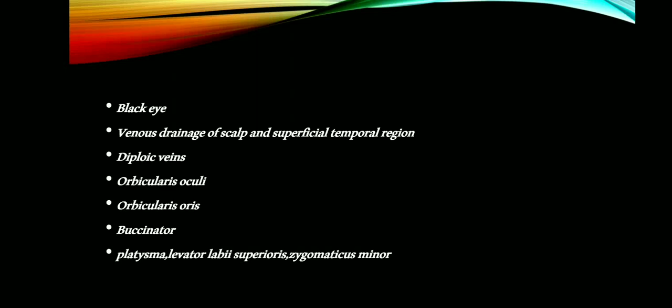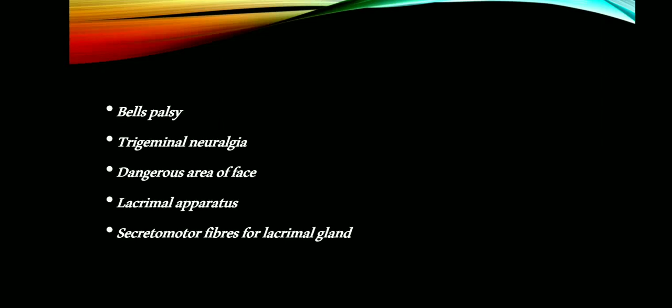Short notes that can be asked from this chapter include: Black eye, venous drainage of scalp and superficial temporal region. Diploic veins is not that important. Orbicularis oculi is also not that important. Orbicularis oris is important. Buccinator is also important. Short notes can also be asked on Platysma, Levator labii superioris, and Zygomaticus minor. Short note on Bell's palsy is very important.